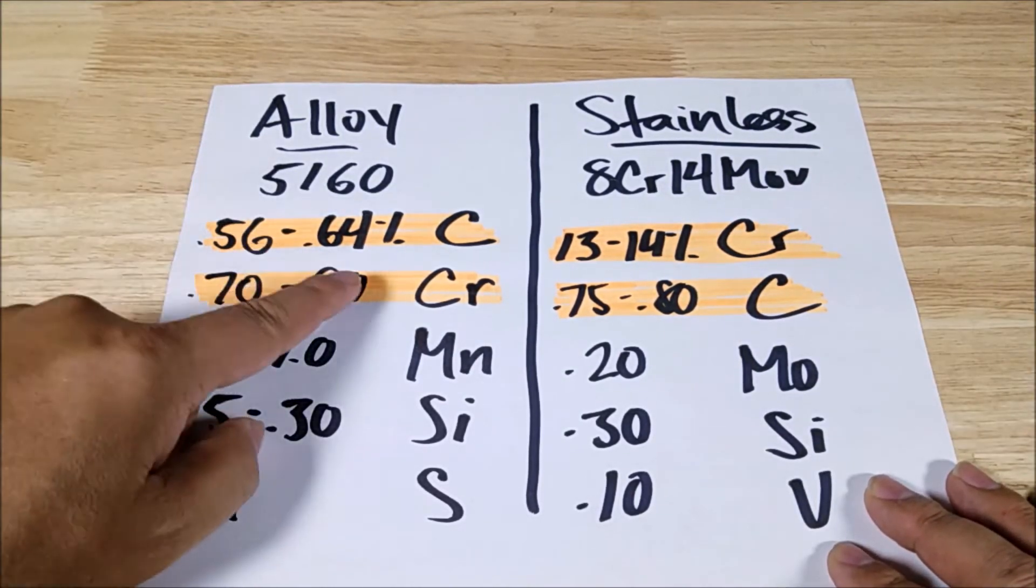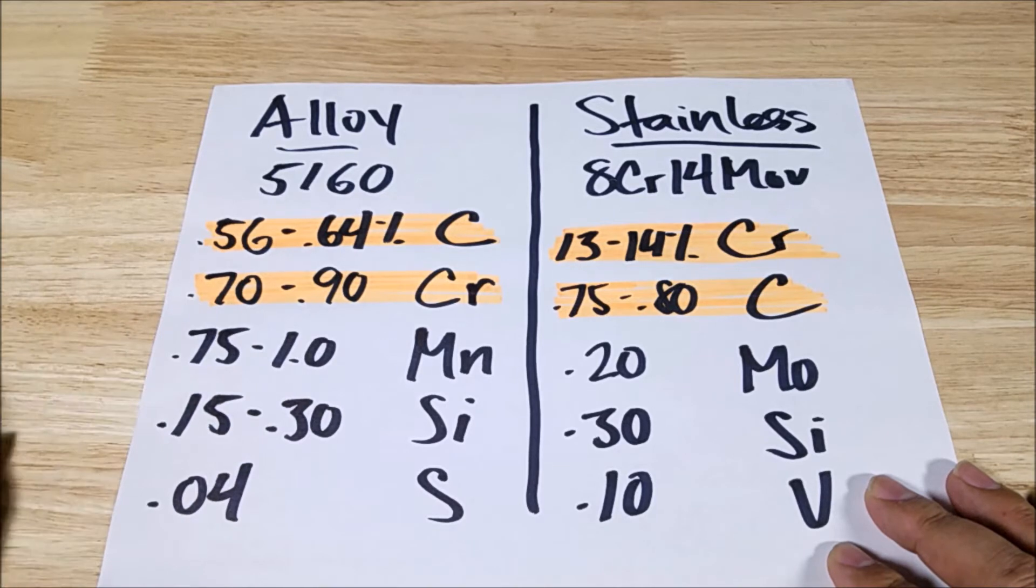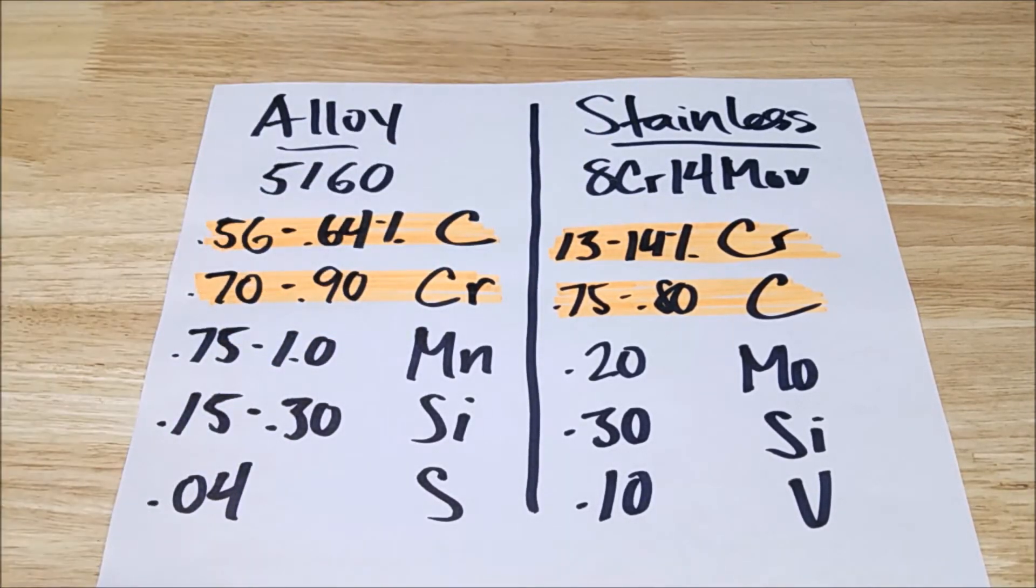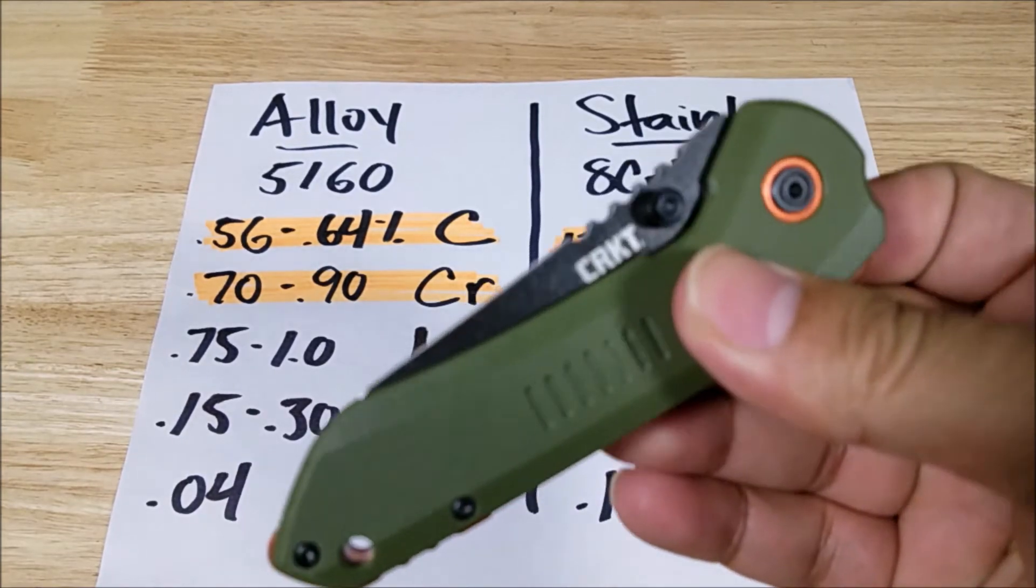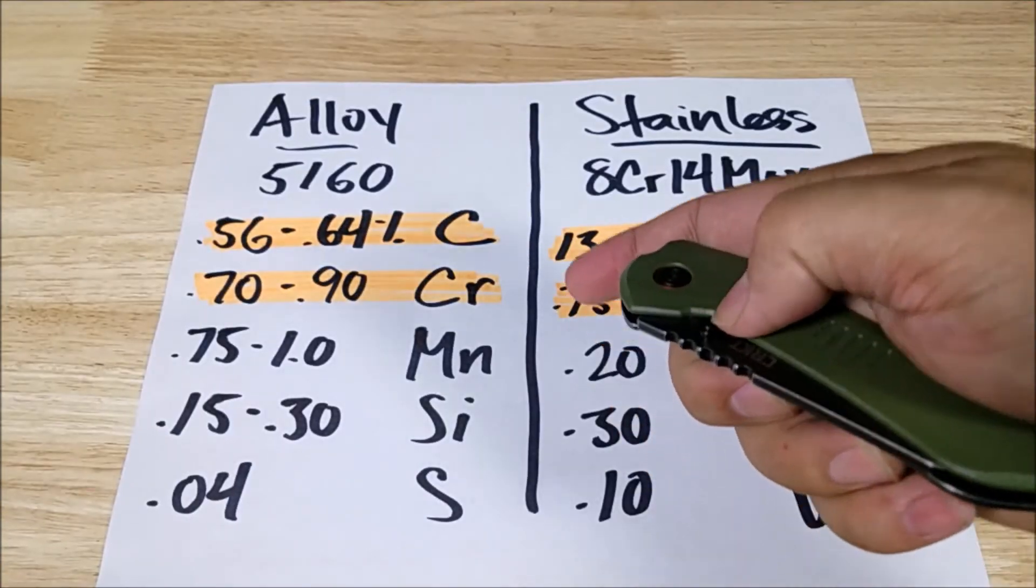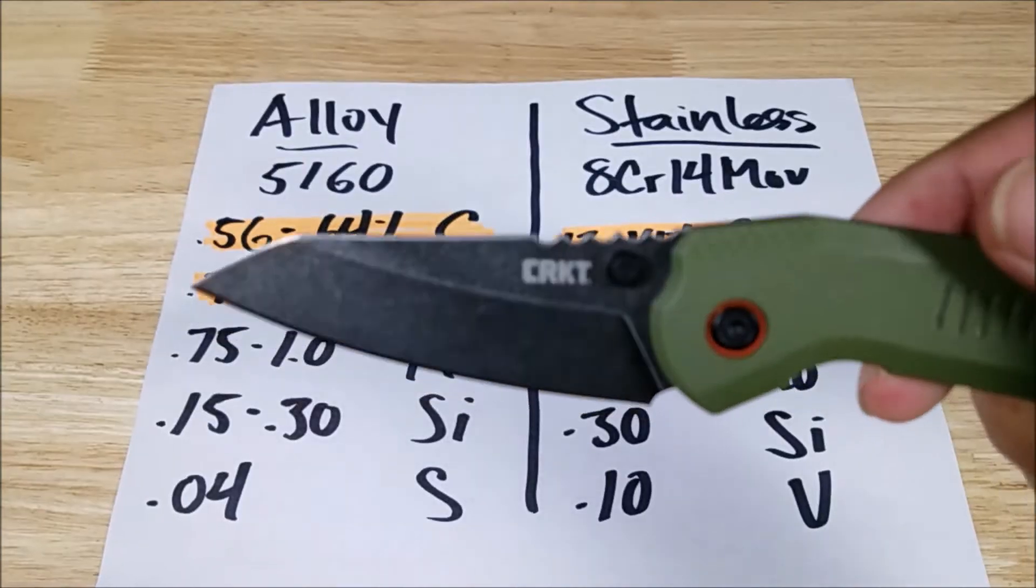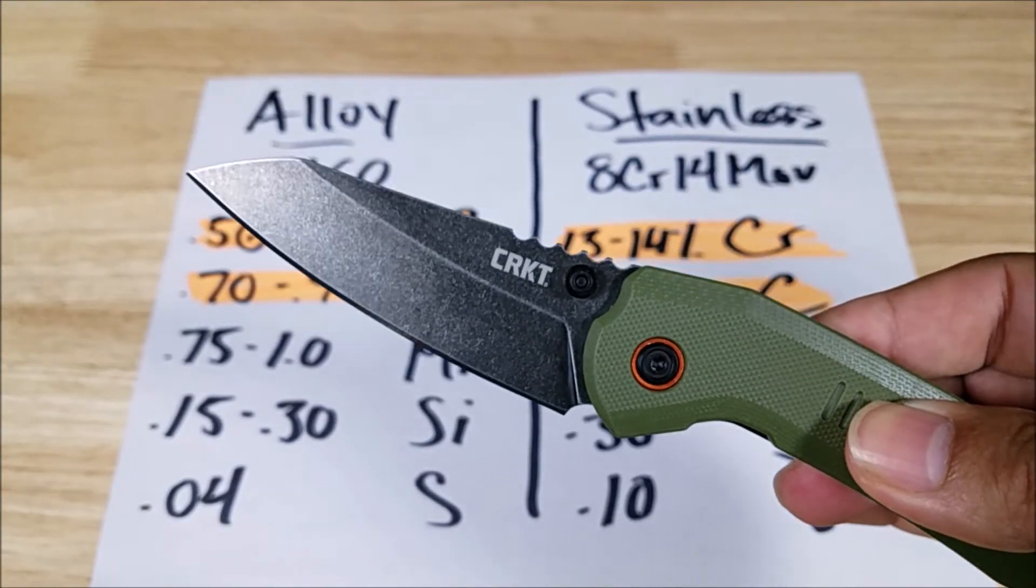And then the alloy side, just a lower level of chromium here, just 0.70%. An example of something like 8CR13 or 14 would be the Overland by CRKT. They absolutely love this steel. It's very easy to sharpen. The edge retention is great. Some people don't like it because it's from China, but Aus8 would be the Japanese version.